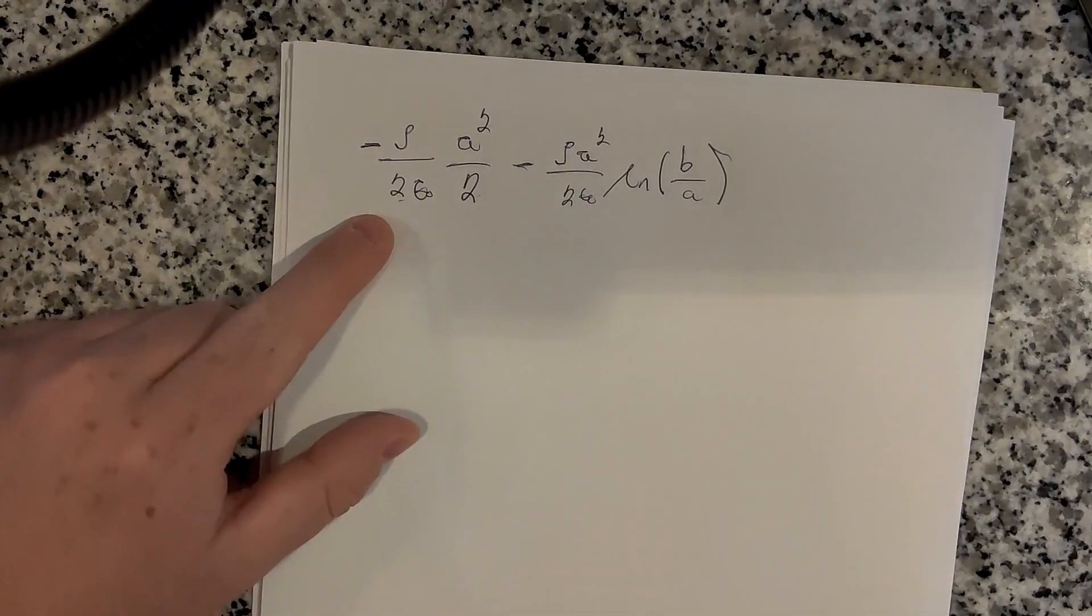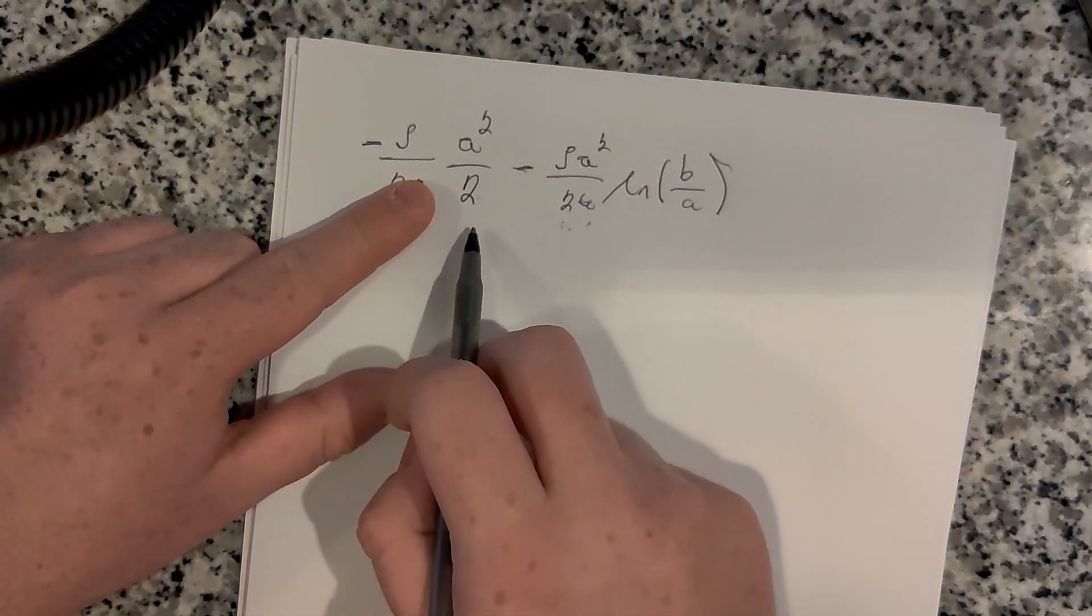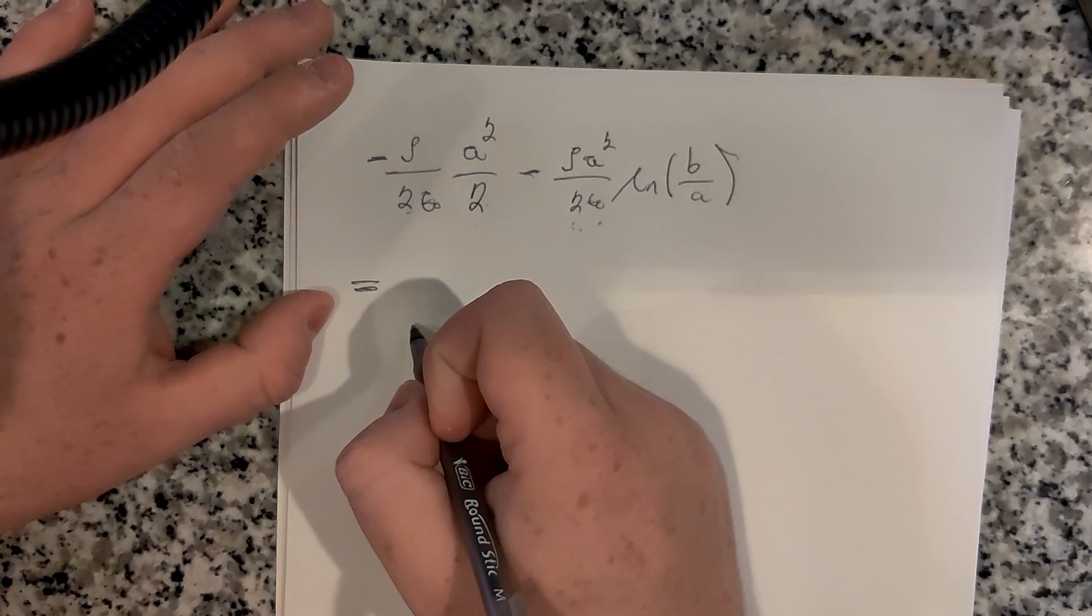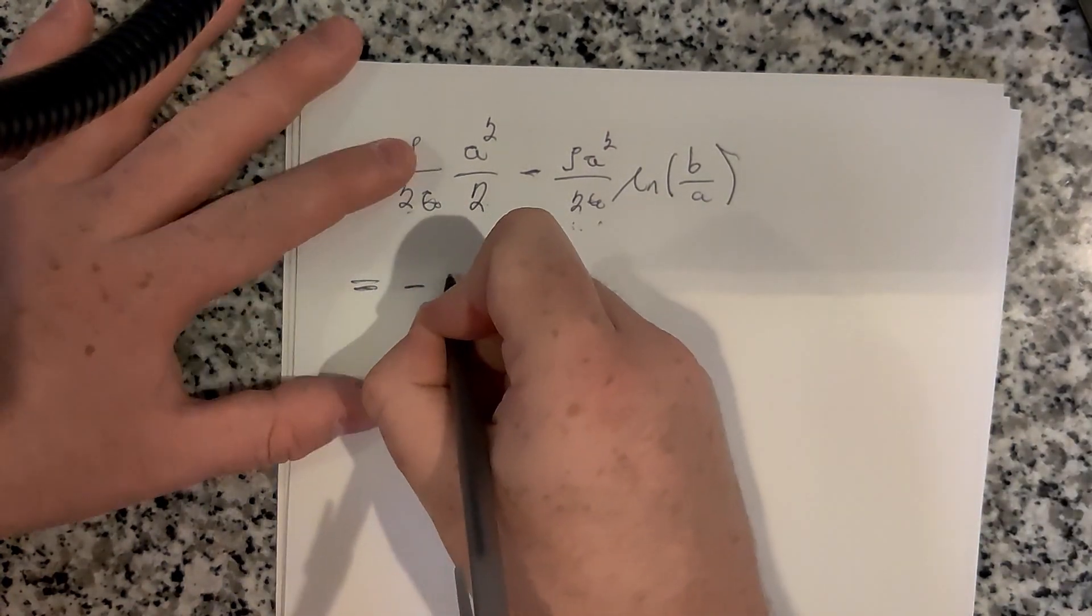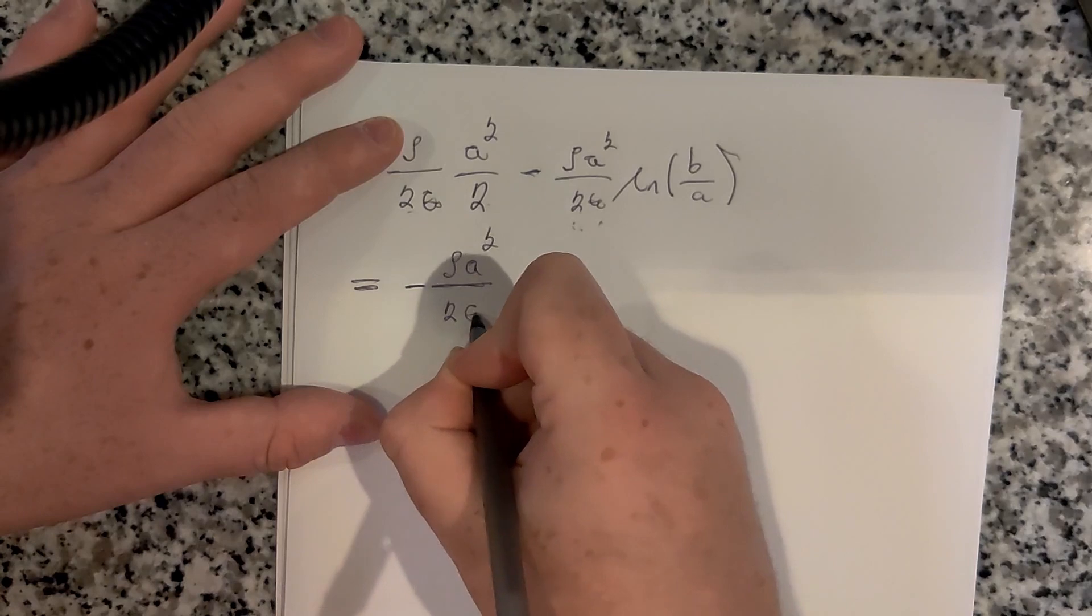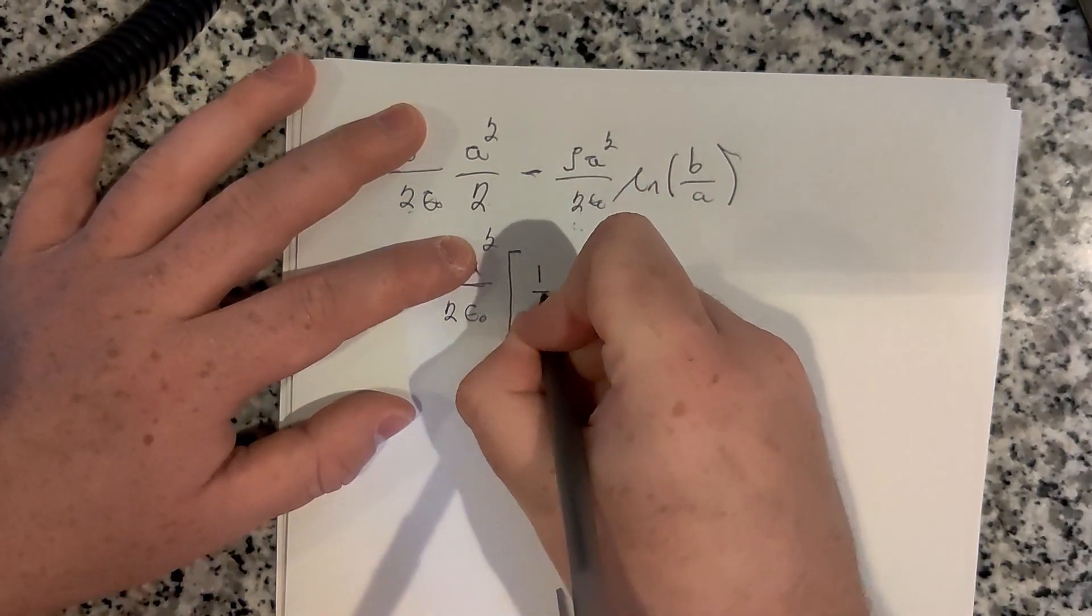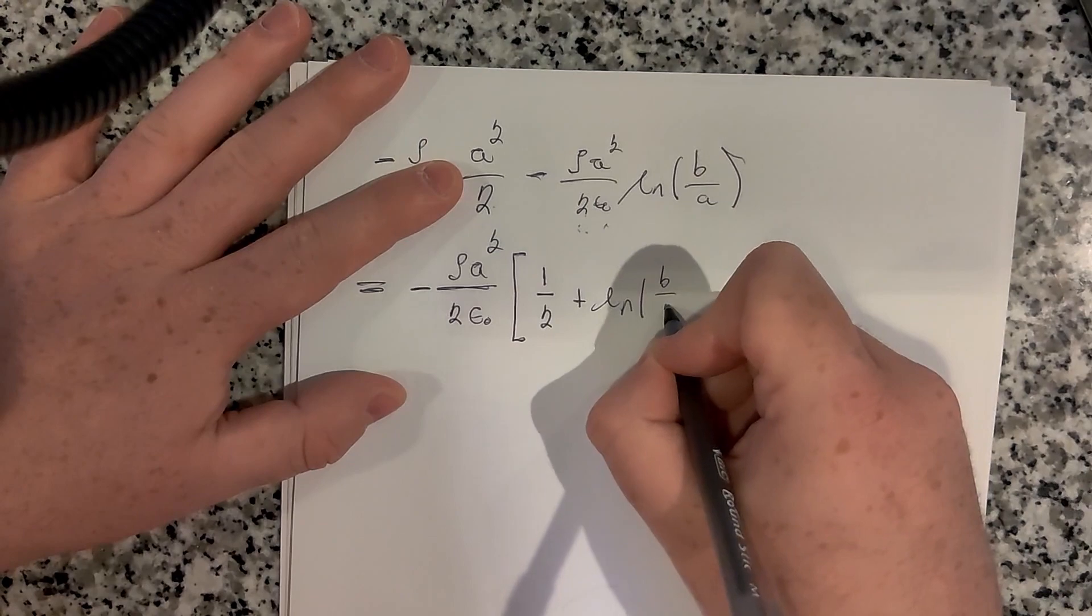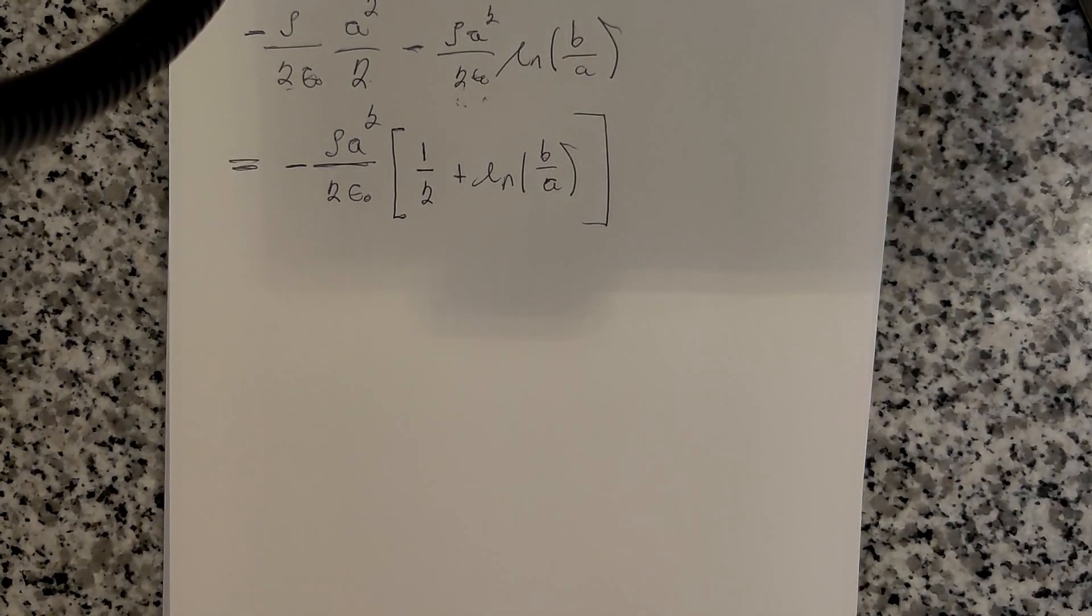So I could factor out rho A squared over 2 epsilon naught. That would leave a one-half here. So this is going to be equal to, let's just factor out the minus sign, so we have a minus sign, rho A squared over 2 epsilon naught. So we factor that out, and that leaves us with a positive one-half here for this first term, and then plus the natural log of B over A. I like that form, I don't think that's a bad form. That's pretty much it, that's the potential difference.